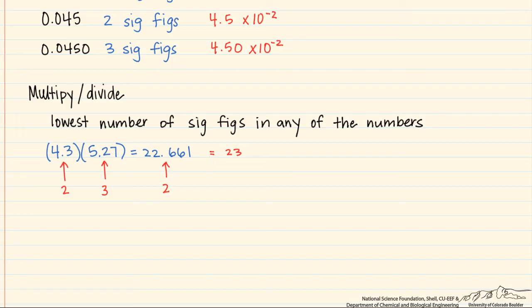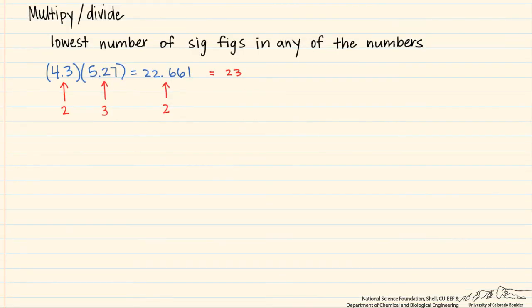Now let's look at it in terms of dividing. So we take 6.89, we divide it by 1.357, and in our calculator we get 5.07737, etc. However, this has three significant figures, this has four. The lowest number of significant figures we have is 3, so this is 5.08.